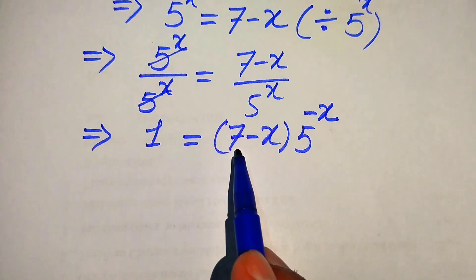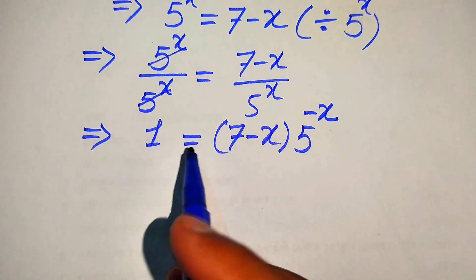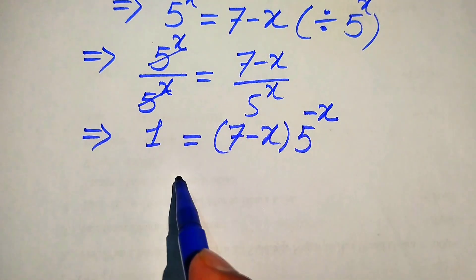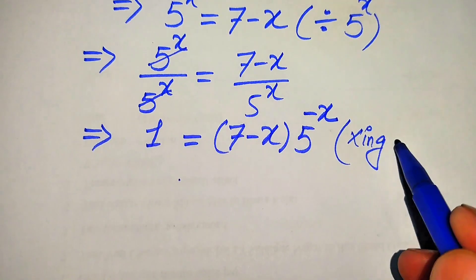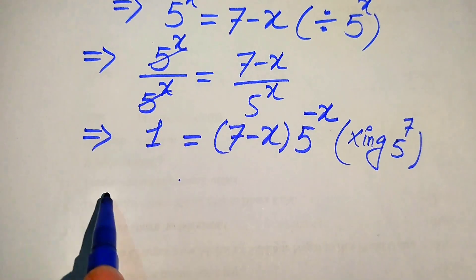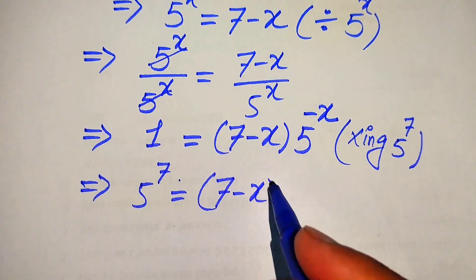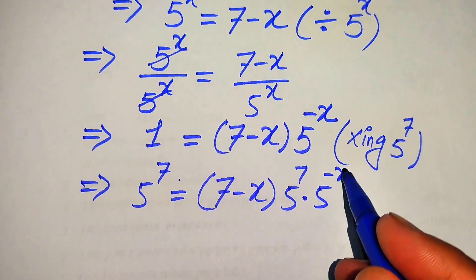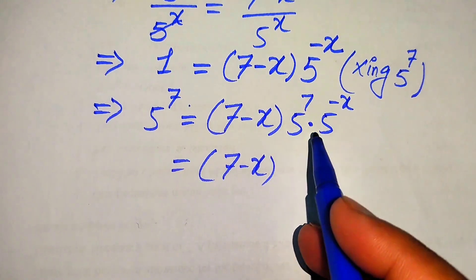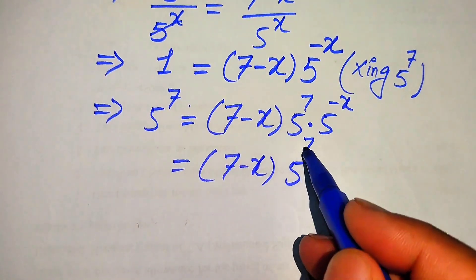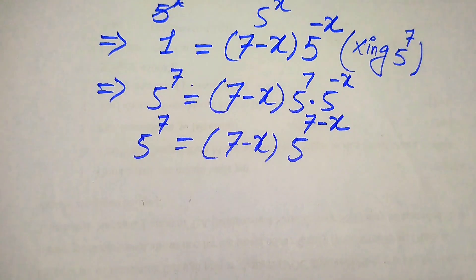Here we have 7 minus x but we need to isolate the exponent. For this, we multiply both sides by 5 to the power of 7. After multiplication, it will be written as 5 to the power of 7 is equals to 7 minus x into 5 to the power of 7 into 5 to the power of minus x. We apply the exponent law — since the bases are the same, we add the exponents — and it becomes 5 to the power of 7 minus x.